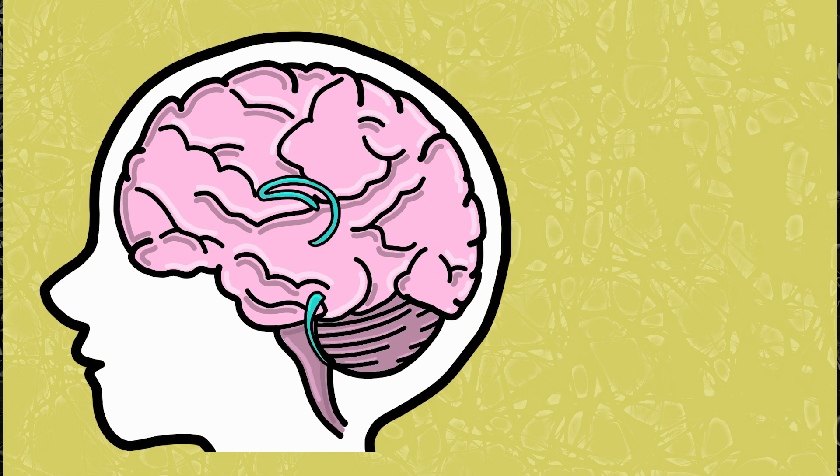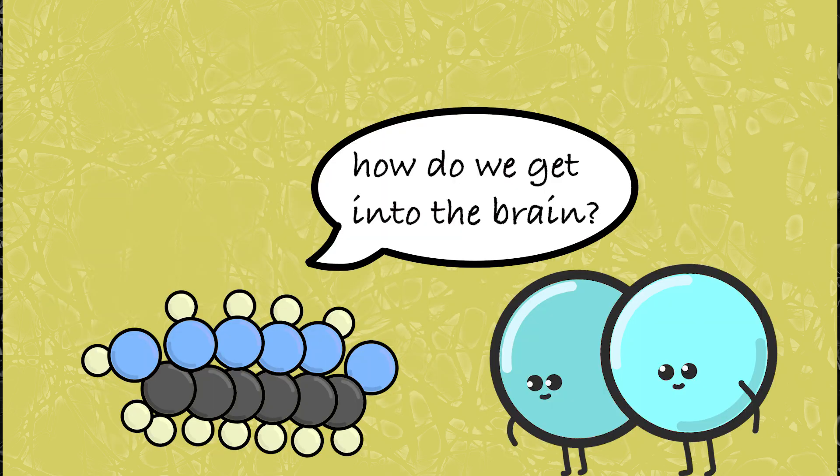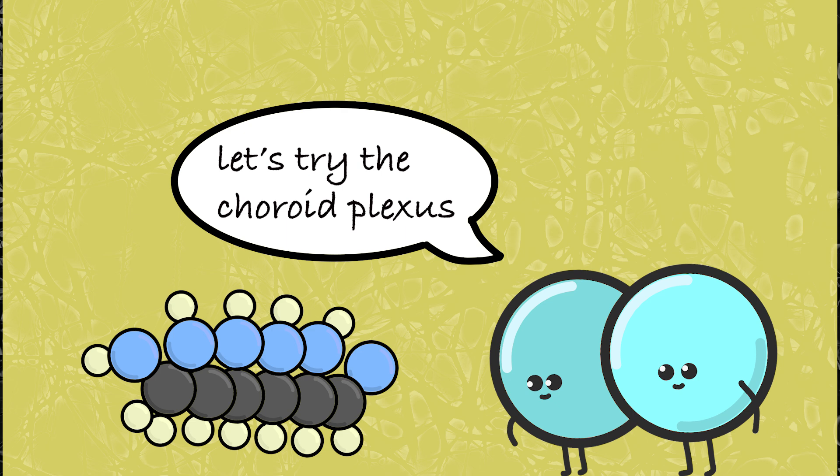The choroid plexus is responsible for making cerebrospinal fluid, or CSF, the fluid that keeps the brain from banging around inside the skull too much. Scientists wondered if this could be the entry site for things like oxygen and glucose, materials that the brain still needs from the blood in circulation.